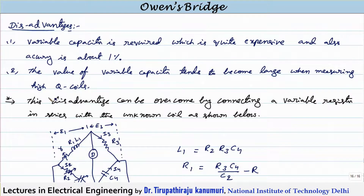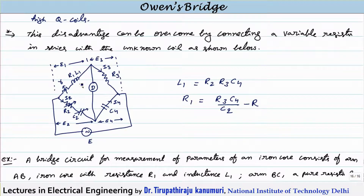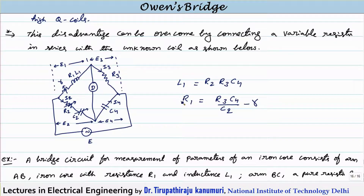We can overcome the disadvantage with high Q coils by employing one variable resistance in series with the unknown coil. With this modification, the balance equations become: L1 = R2·R3·C4, and R1 = R2·C4/C2 minus r, where r is the added variable resistor. Instead of varying C2, we can vary r to get balance, avoiding the need for a large variable capacitor.